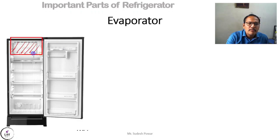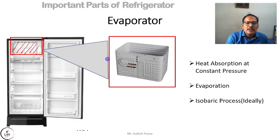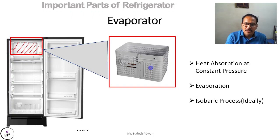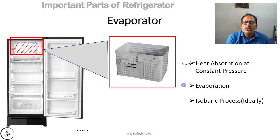The fourth important part is the evaporator. When you open your refrigerator, the cooling compartment you see is the evaporator. You can see embedded pipes inside it. The evaporator is also a heat exchanging device — the refrigerant absorbs heat from whatever we keep inside, giving us the cooling effect. This heat absorption happens at constant pressure, causing the refrigerant to evaporate, which is why it is called the evaporator. This process is isobaric.